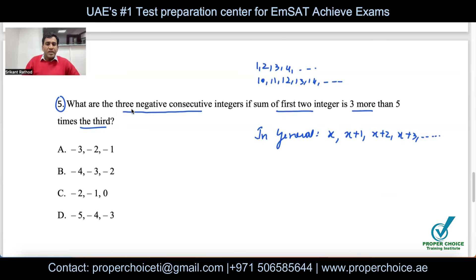The first integer is x and the second is x + 1, so their sum is on the left. 'Is three more than' means equal to 3 plus something. 'Five times the third' — the third integer is x + 2, so: 5 times (x + 2).